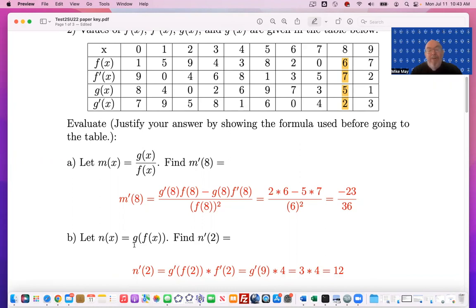For the chain rule, the derivative of g of f of x is g prime of f of x times f prime of x. We're evaluating at 2, and so I'm going to want to know what f of 2 is. That's 9, and I'm going to want to know what f prime of 2 is. That's 4.